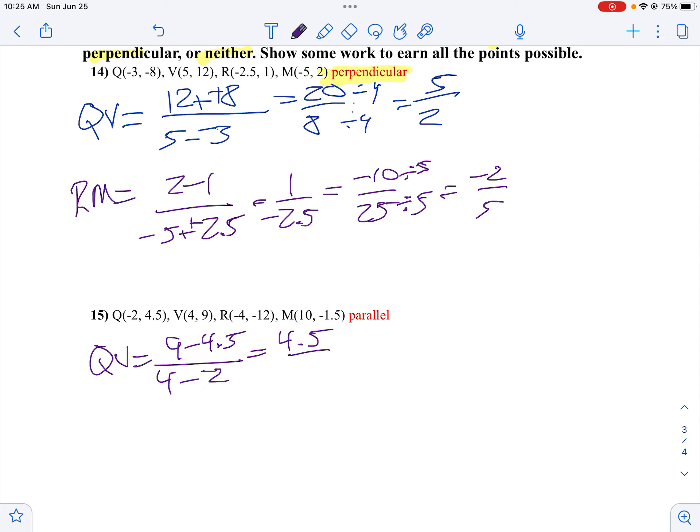4 minus negative 2 would be 6. 4.5 over 6 would be the same thing as 45 over 60. I can divide by 15 this time, because 15 goes into both of those. 45 divided by 15 is 3. 60 divided by 15 is 4. So I get the slope of 3 fourths for Q to V.